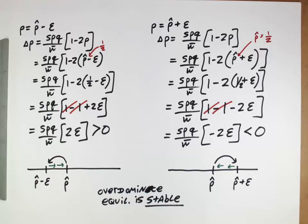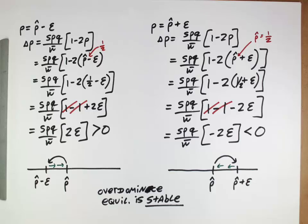Whereas if this equilibrium is unstable, we would not want to issue hunting permits because that might cause the population to careen off into some other trajectory — maybe going extinct. There are lots of economic pressures on government officials to allow hunting, so they use techniques like this to determine whether hunting can happen in a population. We're introducing perturbation analysis in this course to study the stability of allele frequencies in populations, and this technique of solving for an equilibrium and testing its stability is a major method used across ecological and conservation management applications.